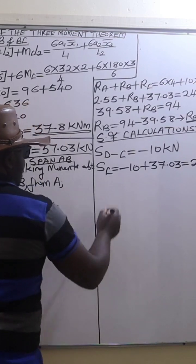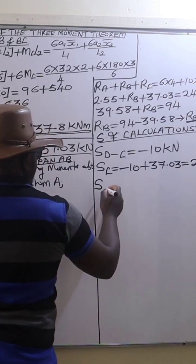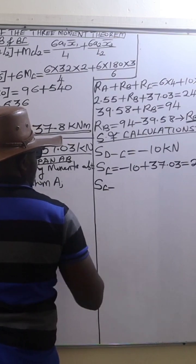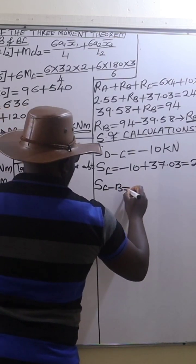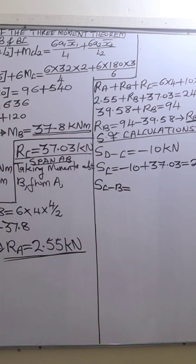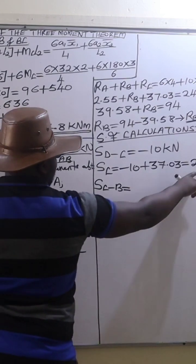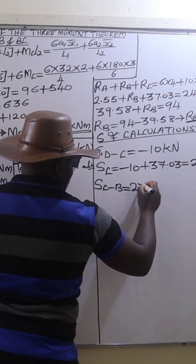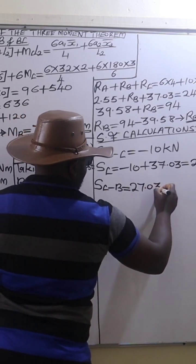Then from there, we go to shear force between C and B. So the shear force between C and B is going to change uniformly from 27.03 kilonewtons.